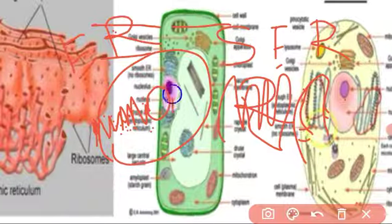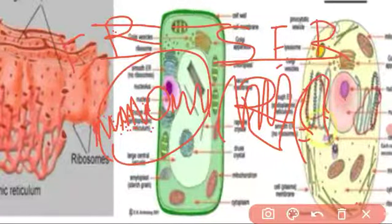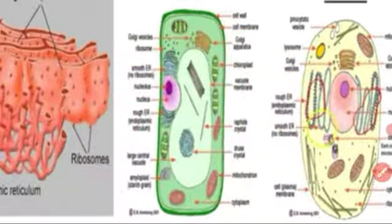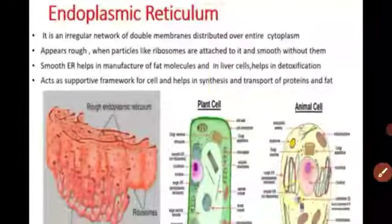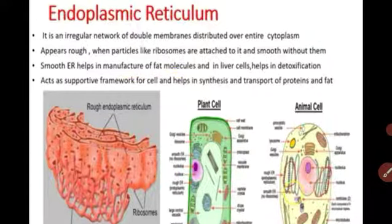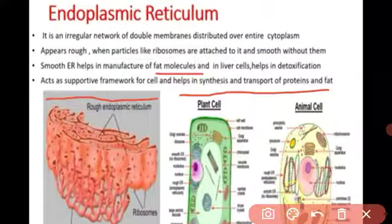The smooth endoplasmic reticulum is the endoplasmic reticulum that has no ribosomes on it. Its main function is the synthesis of lipids and fat molecules. The endoplasmic reticulum also gives support and forms the supporting framework of the cell.